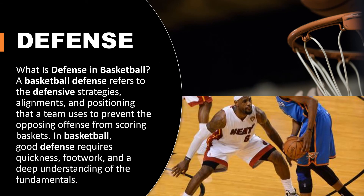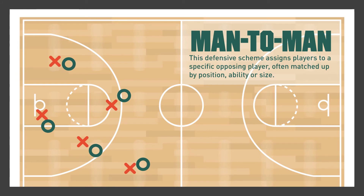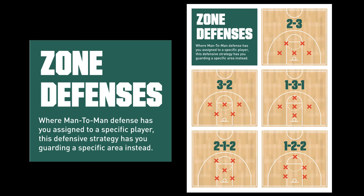Defense: a basketball defense refers to the defensive strategies, alignment, and positioning that a team uses to prevent the opposing offense from scoring baskets. Good defense requires quickness, footwork, and a deep understanding of the fundamentals. There are many types of defensive strategies. Man-to-man defense assigns players to a specific opposing player, often matched up by position, ability, or size. Zone defenses have you guarding a specific area instead of a specific player. Zone defensive formations include the 2-3, 3-2, 1-3-1, 2-1-2, and 1-2-2.